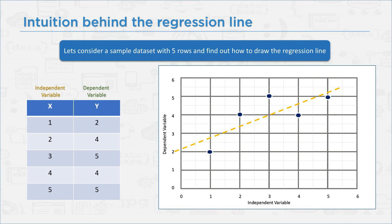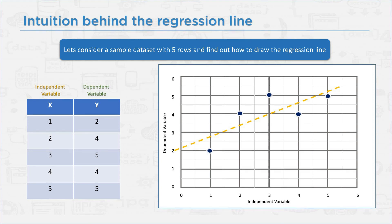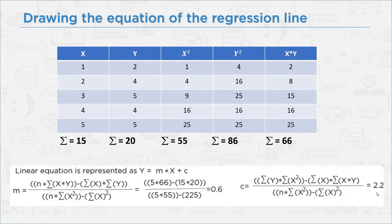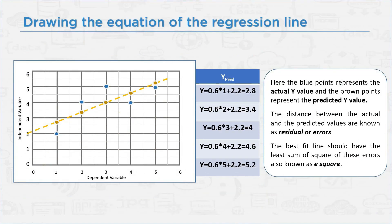Now let's see how linear regression is working — the intuition behind the regression line. Let's consider a simple dataset with five rows and find out how to draw the regression line. We have a dataset of x and y. We plot the dataset into a graph. The next step is calculating the m and c values. Using the formula, we have calculated m as 0.6 and c as 2.2.